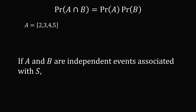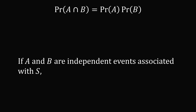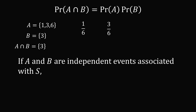Now let's take a look where A is {2, 3, 4, 5} and B is {2, 3, 6}. The intersection of A and B is {2, 3}. The probability of A and B is 2 over 6, the probability of A is 4 over 6, and the probability of B is 3 over 6. Multiplying 4 over 6 by 3 over 6 gives 2 over 6, so A and B are also independent events. Now if A is {1, 2, 3, 4, 5, 6} and B is {3}, the probability of A and B is 1 over 6, but the probability of A times probability of B is 1 over 12, which is not equal, so A and B are not independent.